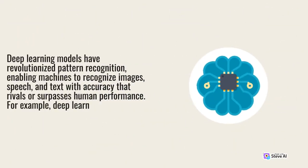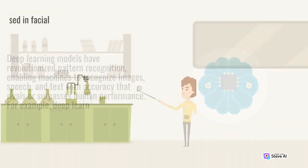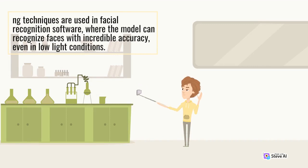Deep Learning models have revolutionized pattern recognition, enabling machines to recognize images, speech, and text with accuracy that rivals or surpasses human performance. For example, Deep Learning techniques are used in facial recognition software, where the model can recognize faces with incredible accuracy, even in low light conditions.